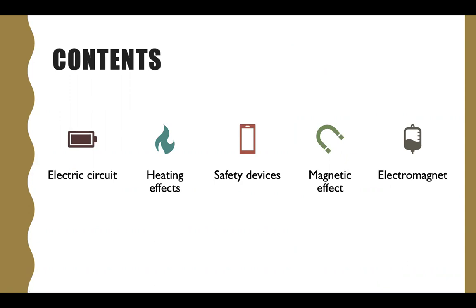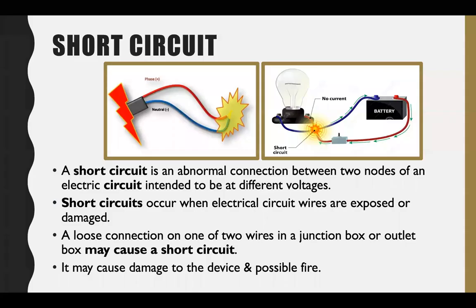Safety devices are used to overcome the problem of short circuits and overload. So what is a short circuit? A short circuit is an abnormal connection between two nodes of an electric circuit intended to be at different voltages, meaning the electricity travels in an unintended path.